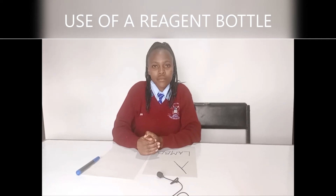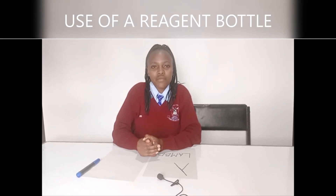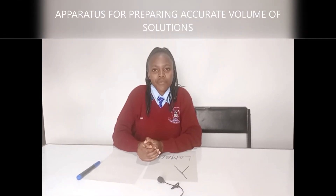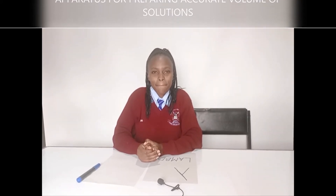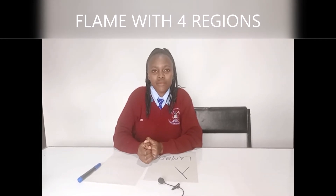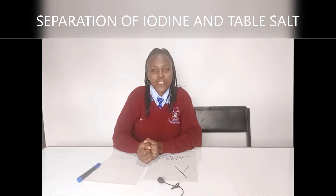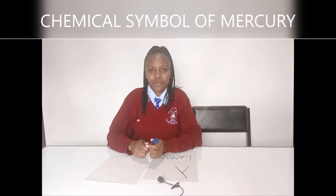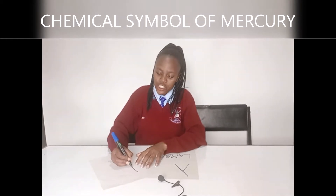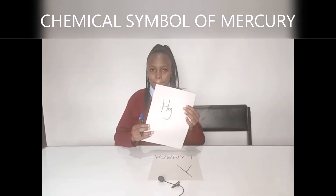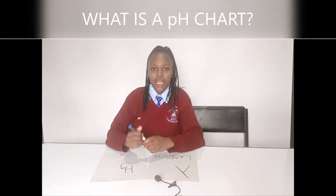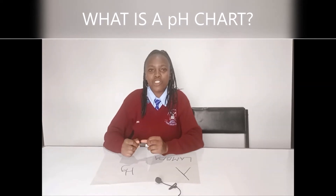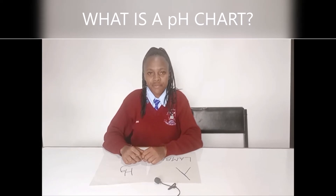Give the use of a reagent bottle. It is used for storing bench reagents — correct. What apparatus is used to prepare accurate volumes of solutions? A volumetric flask — I give you one mark for pronunciation. What is the flame that has four regions? Luminous flame — very correct. How can you separate iodine from common salt? Sublimation — correct. Give the chemical symbol for mercury. Capital H, small g (Hg) — very correct, well written. What is a pH chart? A pH chart is a chart showing the range of colors corresponding to the strength of acids or bases — good for two marks. Name the type of reaction when an acid reacts with a base. Neutralization.